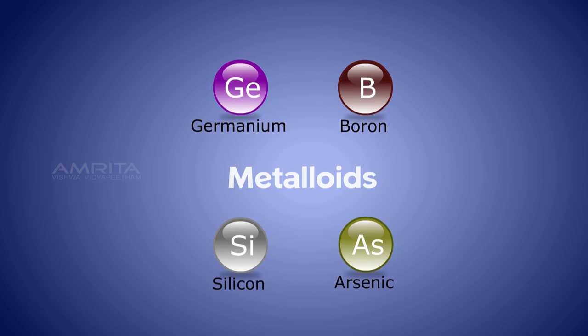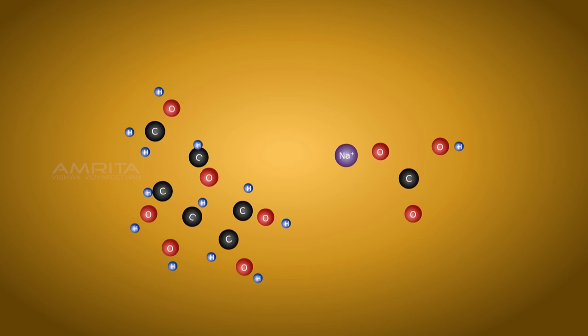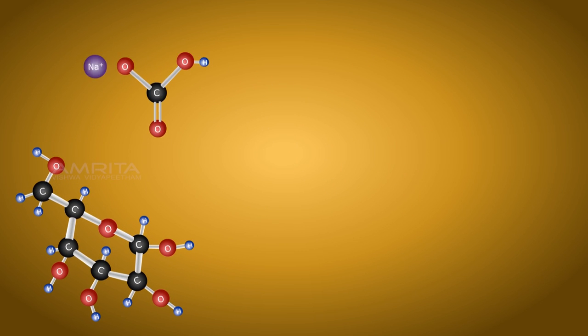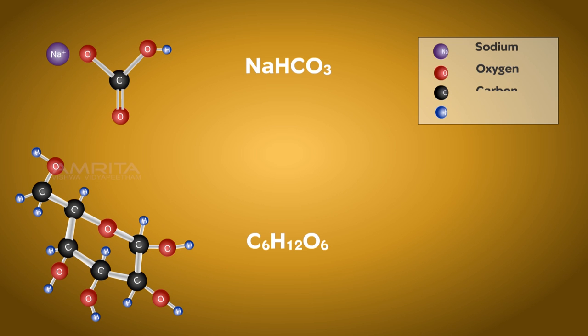Compounds. A compound is a pure chemical substance composed of two or more chemical elements, such as sugar and baking soda. In a compound, the component elements are present in a fixed ratio.